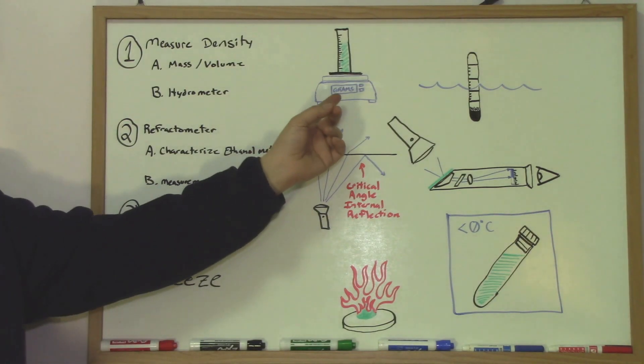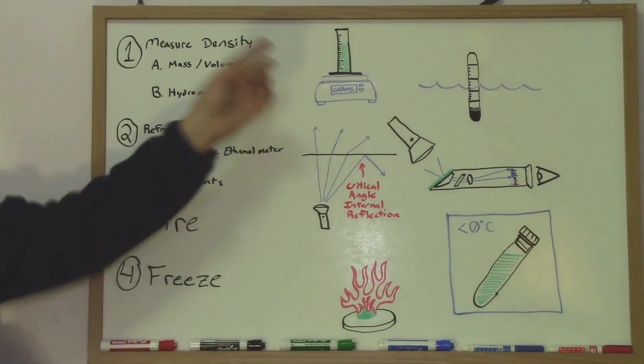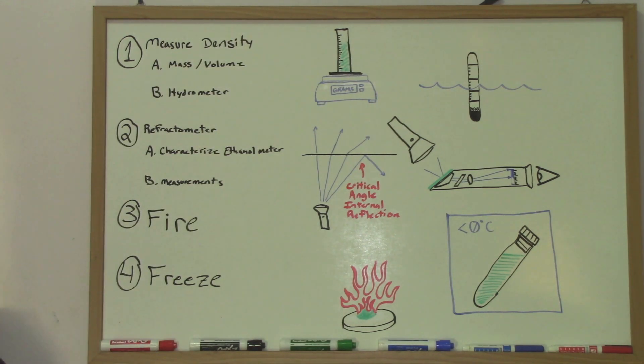So we have a scale, a graduated cylinder, and our specimen depicted in green right there.